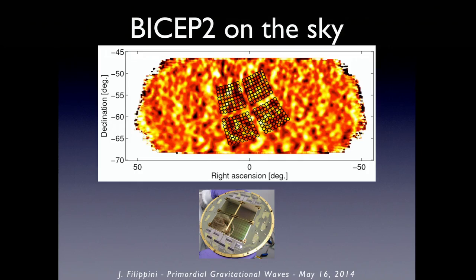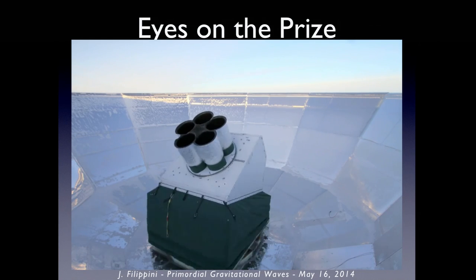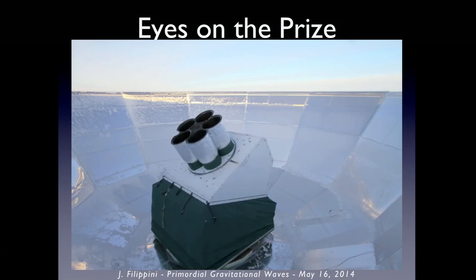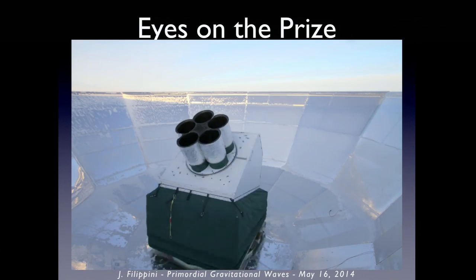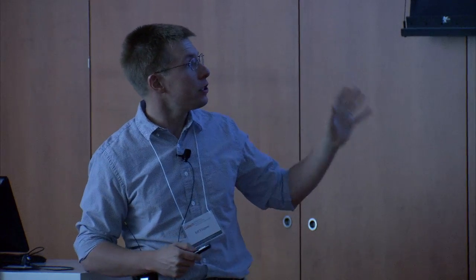The telescope has a 20-degree field of view and scans back and forth across this region, just observing and observing and observing. Another advantage of the South Pole is that the sky just rotates over you: if you pick a good bit of sky, it's always up, and you can always observe it. Your duty cycle is limited only by cryogenic cycling, so you can get really good observing duty cycles.